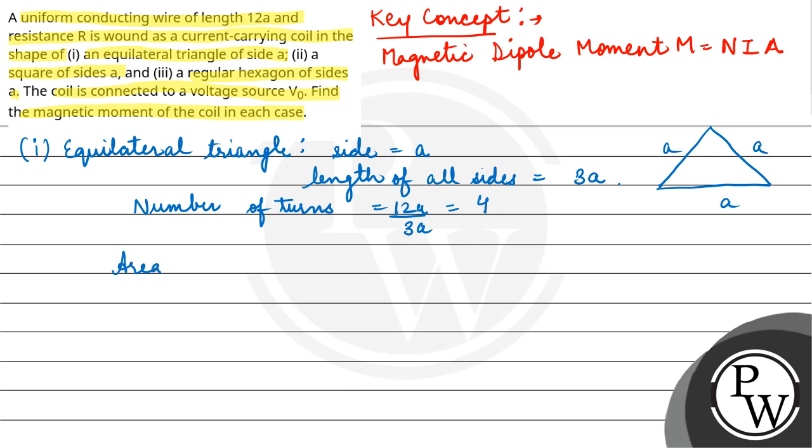if we find the area of triangle ABC, we draw a perpendicular. Area of triangle ABC is half into base BC into height AD.